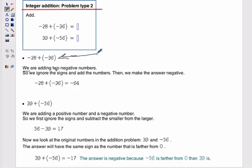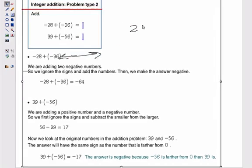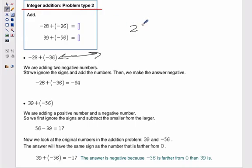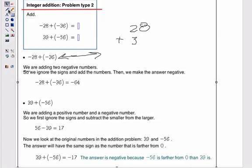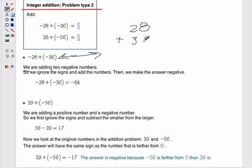So because they're both the same sign, we can just say 28 plus 36. That makes 64.